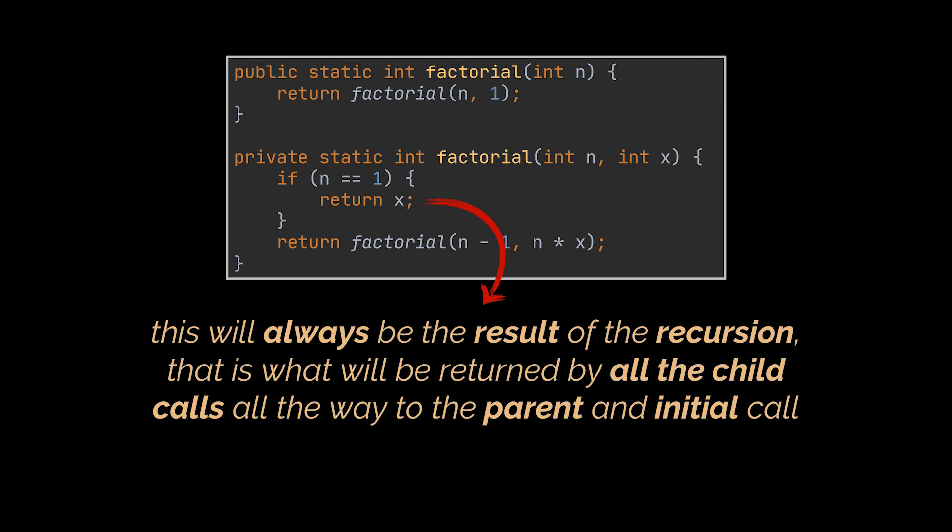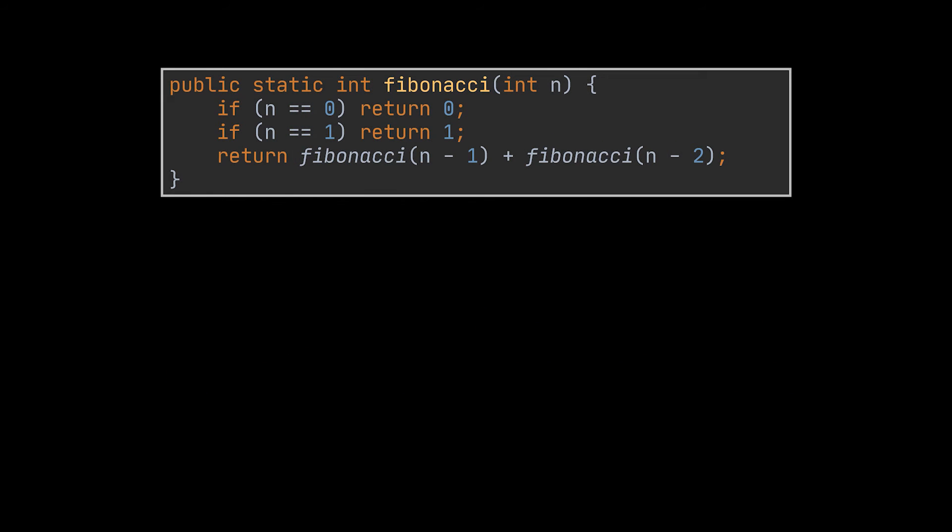You see, in a tail recursive method, the result of the stop condition is actually the result of the whole recursion because that is what will be returned by all the child calls all the way to the parent and initial call. I know this is tough, so before proceeding to the visualization part, let's transform the second example we covered in the previous video as well, the Fibonacci sequence.